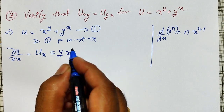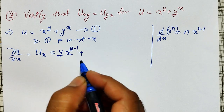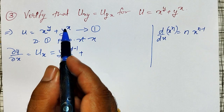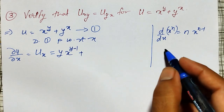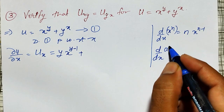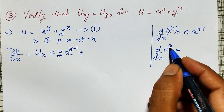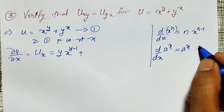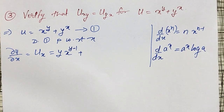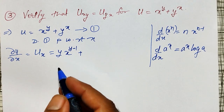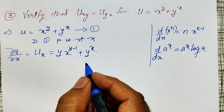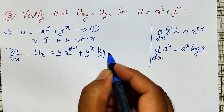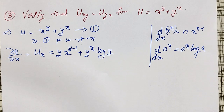It becomes y into x to the power y minus 1. For the second term, y raised to x, I will use the rule d/dx of a raised to x, since x is in the power and y is constant. That gives y raised to x into log y. This is my u_x. Call this equation number 2.